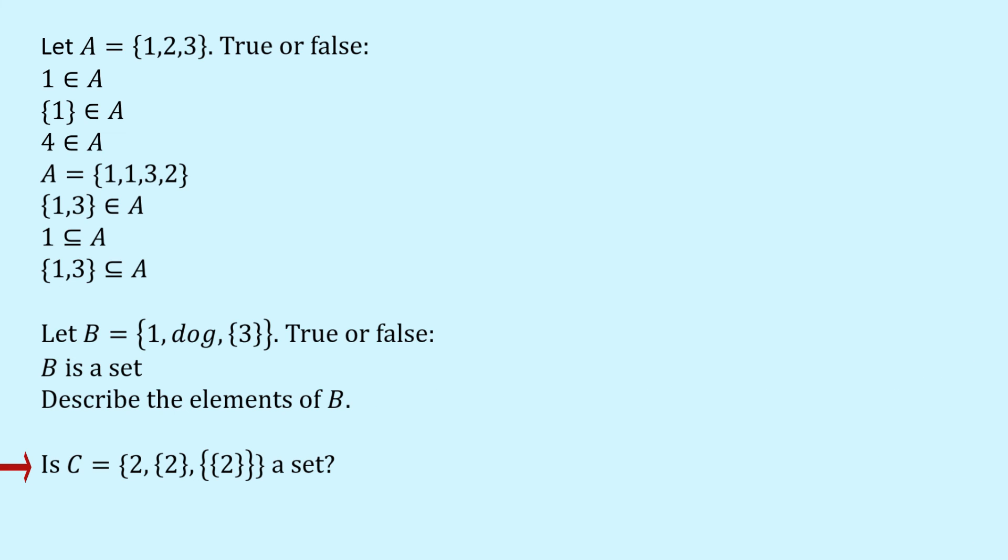So finally, this expression for C. Is it a set? Well, it's got the curly brackets right on the outside. It contains three elements. So it's a set. So what are the elements? The number 2, the set containing the number 2 and the set containing the set containing the number 2. A perfectly valid set.